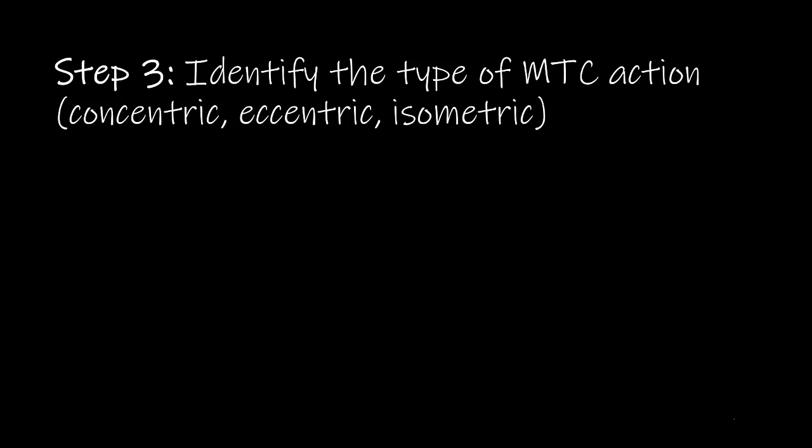Step 3 is to identify the type of MTC action, be it concentric, eccentric, or isometric. We will use a flow diagram to aid us in making a decision. First, we identify the joint motion and the effect of the external force. Then we determine the movement direction — that is, whether the joint motion and the effect of the external force are in opposite directions or in the same direction.